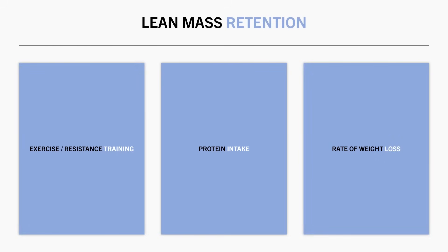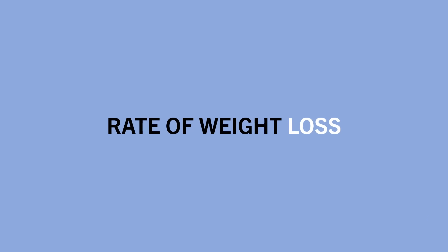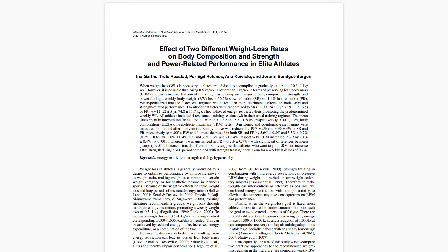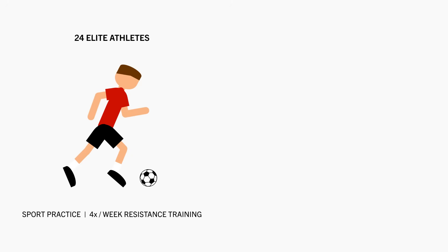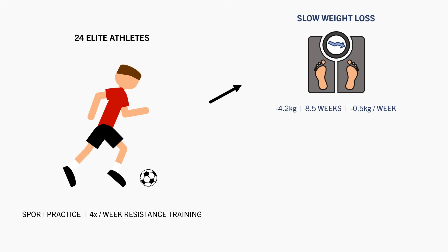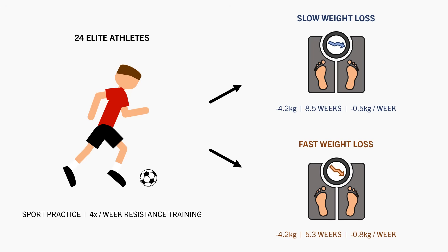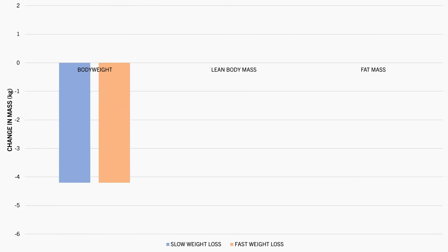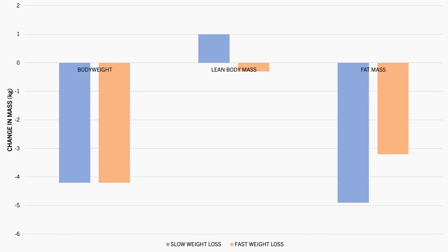The third variable that can influence lean mass retention during weight loss is our rate of weight loss. Losing weight at a slower rate typically results in greater lean mass retention compared with faster weight loss. For example, this study compared the effects of losing weight at two different rates on body composition changes. 24 athletes from the Norwegian Olympic Sports Centre underwent a weight loss phase while performing their regular sport practice plus resistance training four times per week. Half the athletes lost an average of 4.2 kilograms in 8.5 weeks while the others lost the same amount in 5.3 weeks. Both groups consumed 1.6 grams of protein per kilogram per day. A little lean mass was gained in the slower weight loss group while a small reduction was observed in the fast weight loss group, meaning the slow weight loss resulted in greater fat loss.